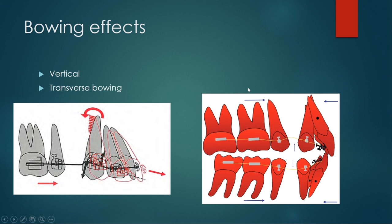Apart from the vertical bowing effect, there is also a transverse bowing effect, where if you retract the upper incisors and the canine on a light wire, the premolars expand and the molars rotate in a counterclockwise — that is, a distolingual — direction.